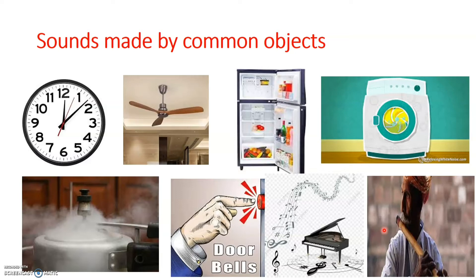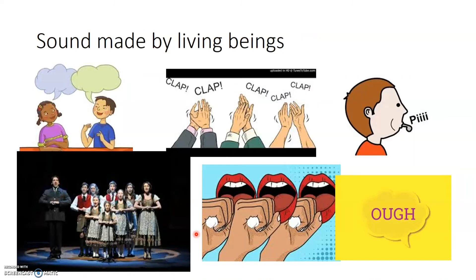So, these are different objects that produce very loud sounds while some other objects produce very low sounds, and we will be able to hear these sounds only when we are close to them. Now, we have learnt about sounds made by different common objects around us. Let's have a look at sounds produced by living beings around us.